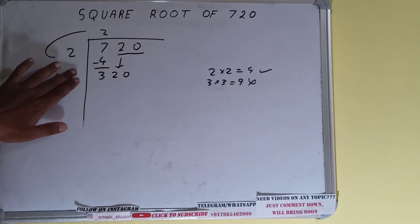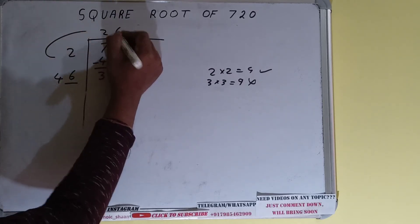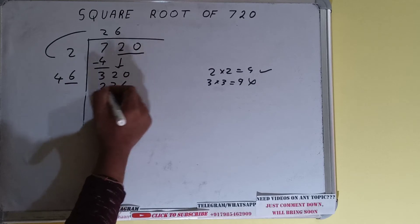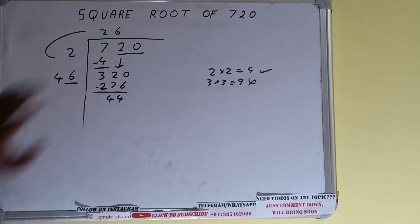Now whatever number we write here we have to write here also. So if we write 6 here and 6 here it will be 276, and on subtracting 44 will be left. Now 46 into 6 we did.